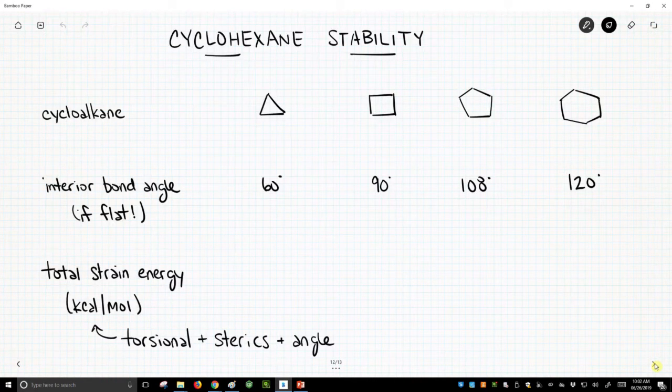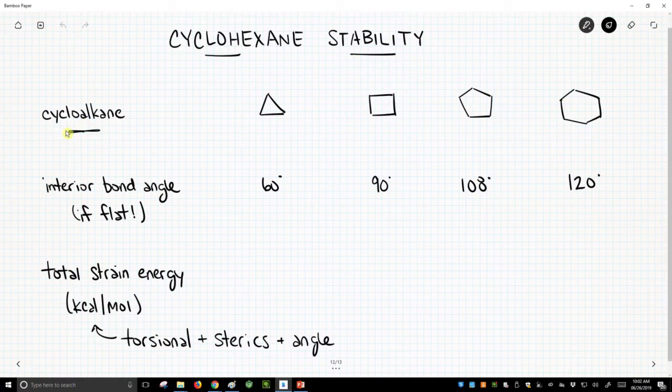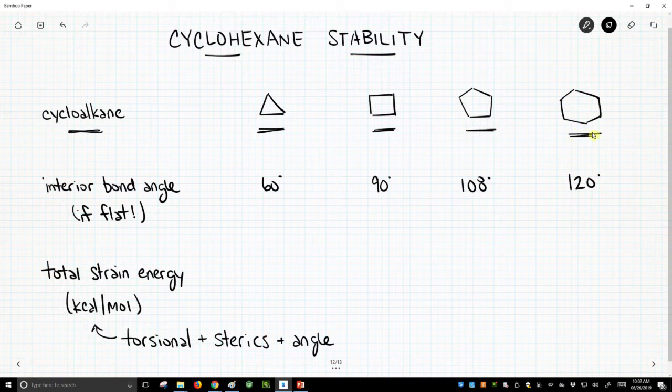So on the screen we have some different cyclohexanes written. We have cyclopropane, cyclobutane, cyclopentane, and cyclohexane.